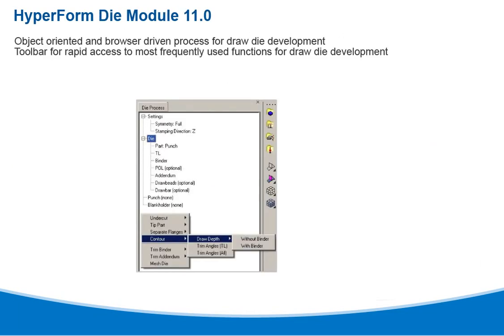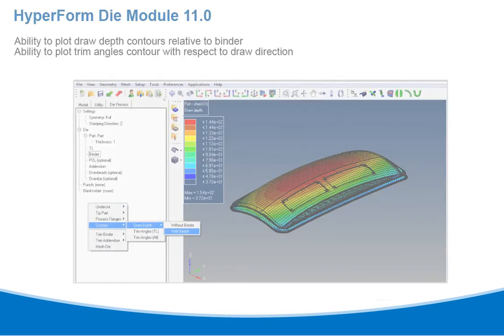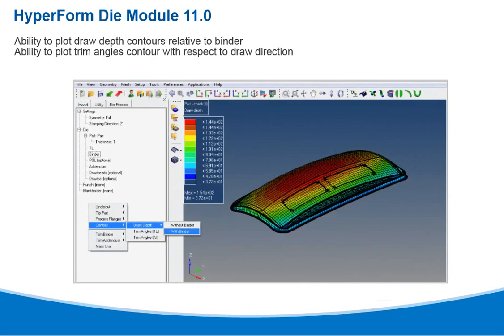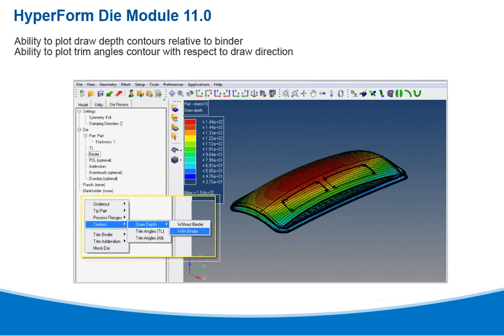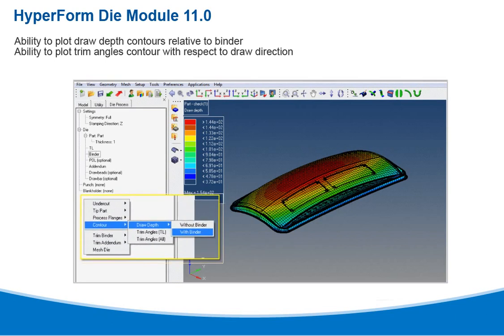Hyperform die module 11.0 provides an object-oriented and browser-driven process for draw die development. There is also a toolbar for rapid access to the most frequently used functions. The die module in 11.0 also offers the ability to plot draw depth contours relative to the binder, and plot trim angle contours with respect to the draw direction.